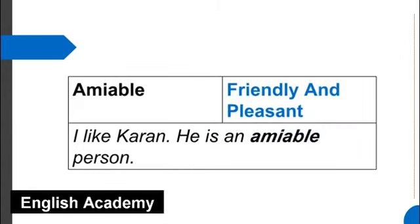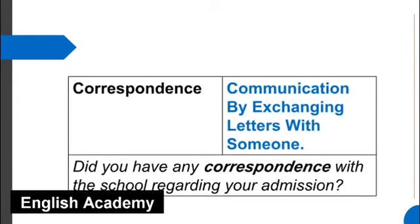Amiable means friendly and pleasant. Example sentence: I like Karan. He is an amiable person. Correspondence means communication by exchanging letters with someone. Example sentence: Did you have any correspondence with the school regarding your admission?